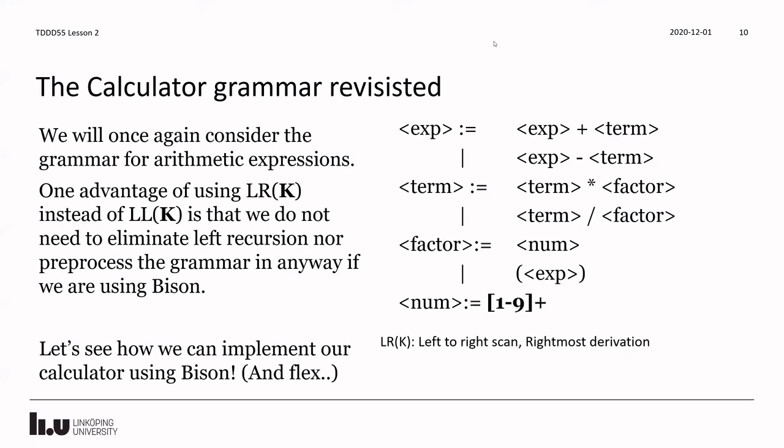We do not need to eliminate left recursion, nor do we need to pre-process the grammar in any way if we're using Bison or another bottom-up parser. You might remember this grammar from lesson two — an expression is an expression plus a term, and so on. We rewrote this grammar into a version without left recursion last time, but now let's see if we can use this original grammar together with Bison to write a specification and do the same exercise shown in the complementary videos.